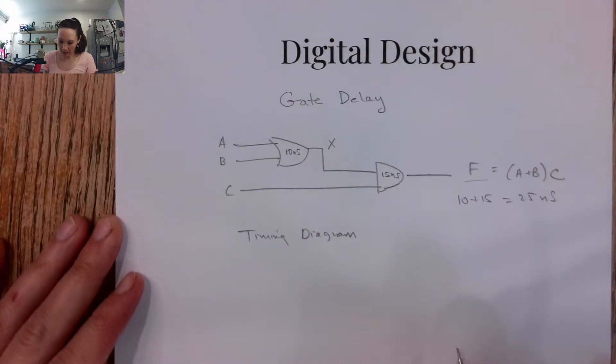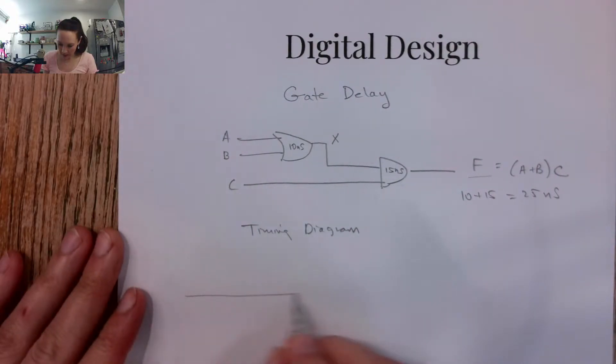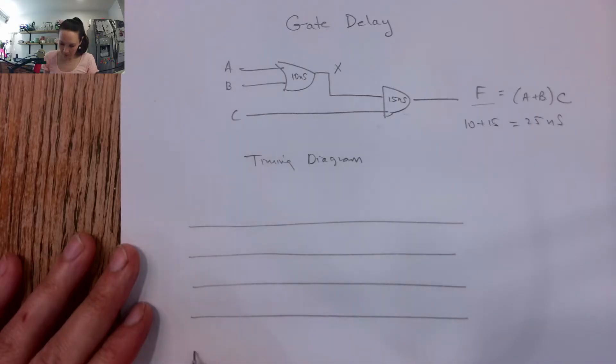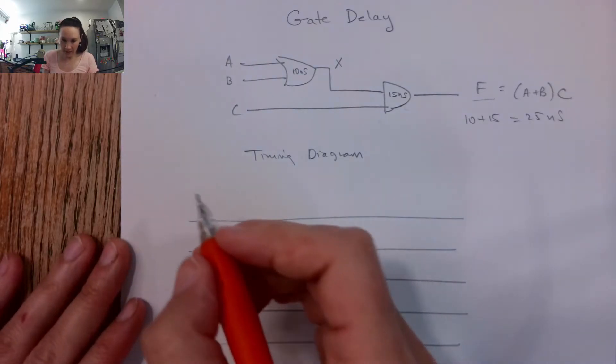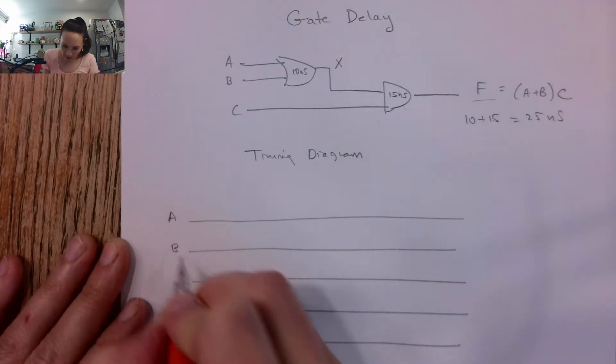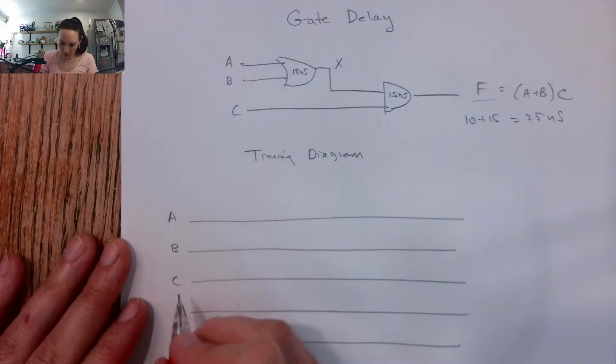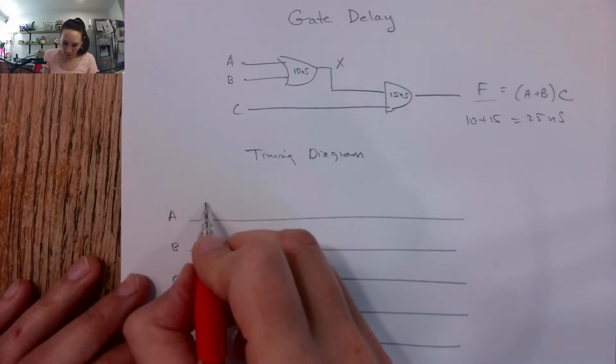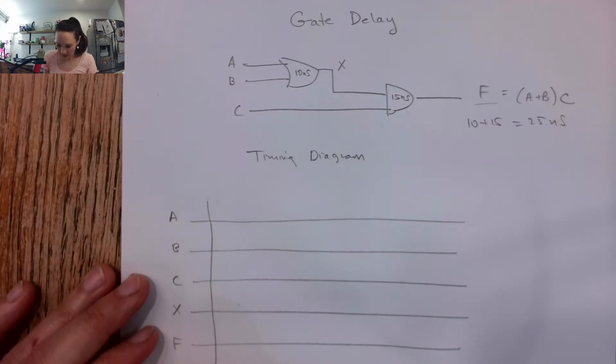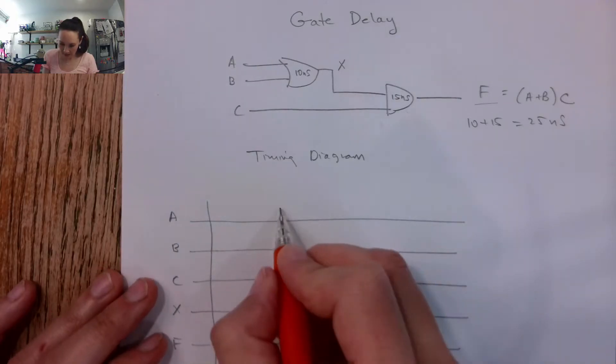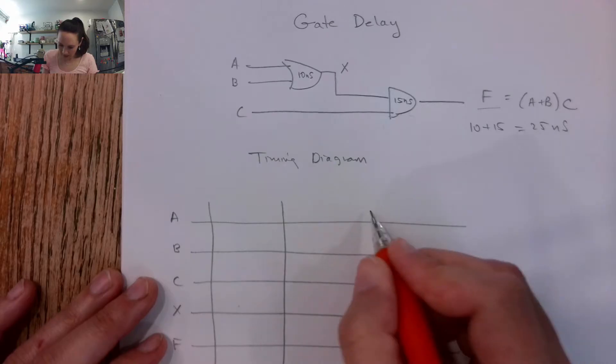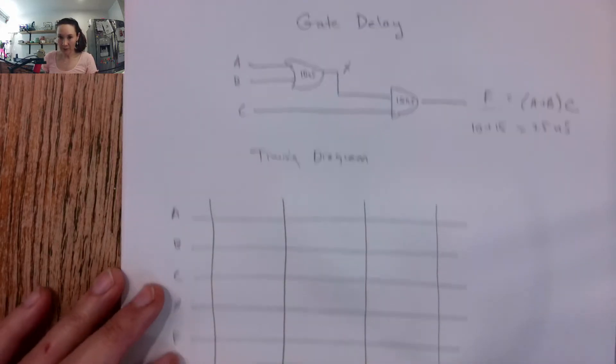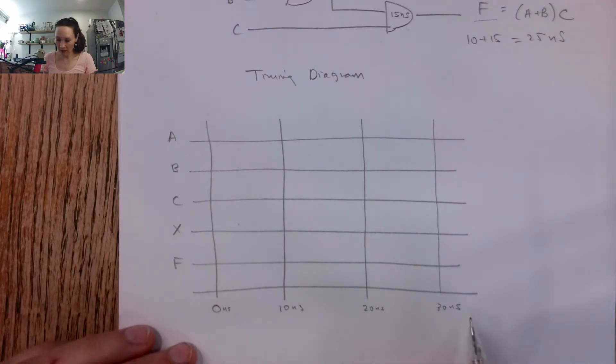It's helpful to see it on a plot like this. The way we would make this is we put our inputs and outputs together on these horizontal lines. Let's say this can be A and B and C, and then the result of A OR B we called that X, and then our output we called that F. So then I can put some marks on here. Let's say this is 0 nanoseconds, then 10 nanoseconds, 20 nanoseconds, and 30 nanoseconds. So here are my time labels.